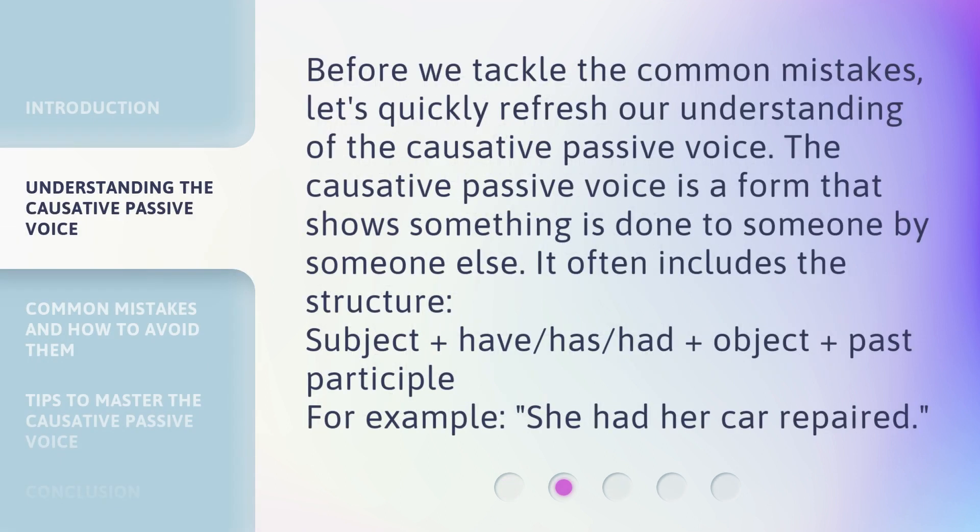Before we tackle the common mistakes, let's quickly refresh our understanding of the causative passive voice. The causative passive voice is a form that shows something is done to someone by someone else. It often includes the structure: subject plus have/has/had, plus object, plus past participle. For example: she had her car repaired.